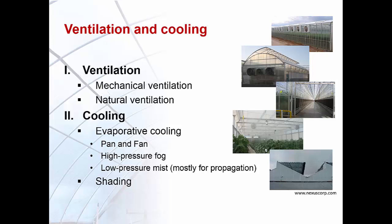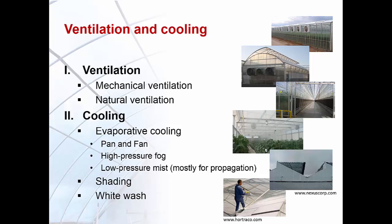Cooling can also be achieved by using whitewash on the greenhouse glazing. There has been considerable interest in glazing materials that can selectively reflect or absorb the infrared region of solar radiation. Films with such properties are commercially available. Depending on climate region, production system, and cost factors, one or several of these methods may be selected for greenhouse ventilation and cooling.